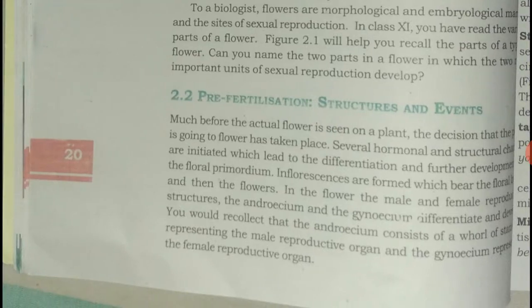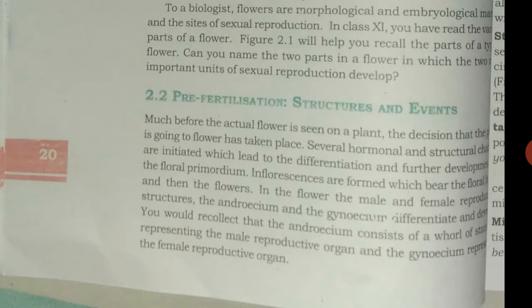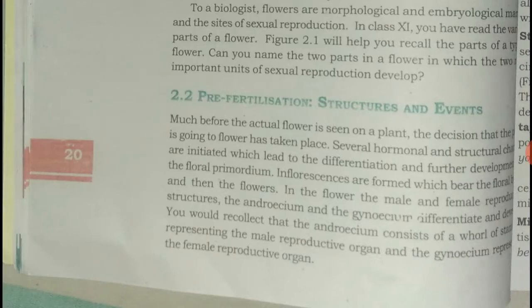Pre-fertilization structures and events: before the actual flowers are seen on plants, several hormonal and structural changes initiate, which lead to differentiation and further development of the floral primordium. Floral primordia develop into floral buds, which develop into flowers.